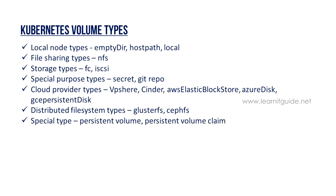In Kubernetes Volumes, there are many types supported. Depending on your environment, you can use types such as NFS, FC, iSCSI, Local Path, Secret, Git Repo, vSphere, ESX, OpenStack, Cinder Volume, AWS EBS, and Azure Disk. You can choose the volume type appropriate for your environment.